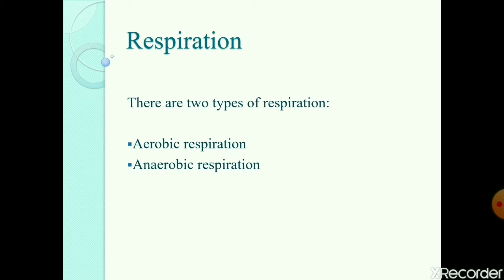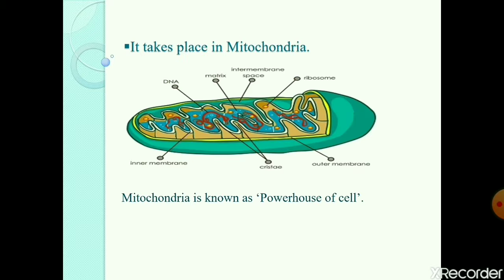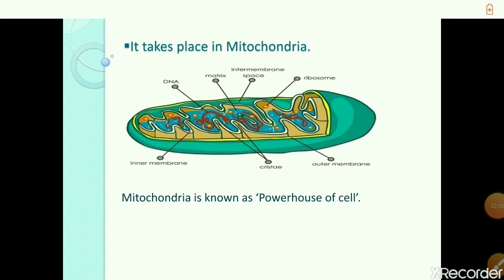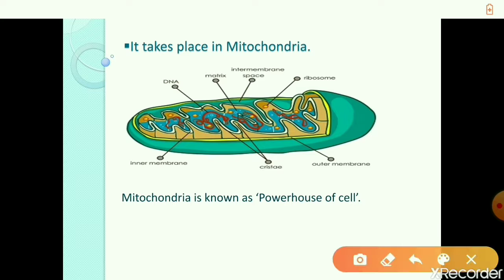Moving to the next slide — respiration takes place inside the mitochondria. See here the structure of mitochondria. Mitochondria is a double membrane cell organelle, which means it consists of two membranes: the outer membrane, the inner membrane, and the space between these two membranes is called the intermembrane space. The inner membrane is the site for the electron transport chain, and inside the inner membrane there is a semi-solid fluid known as matrix.